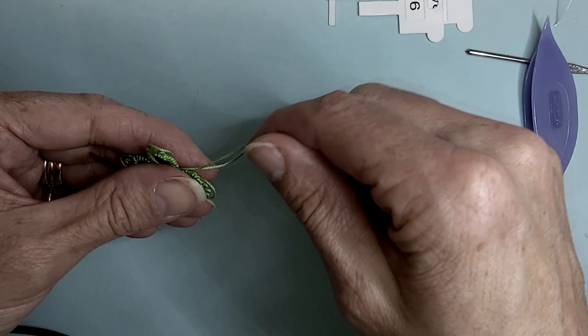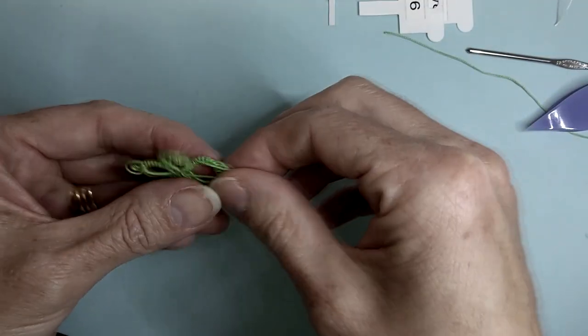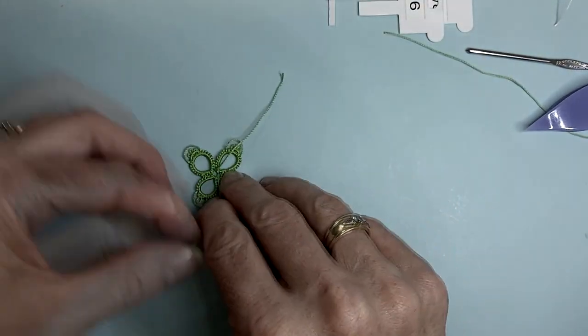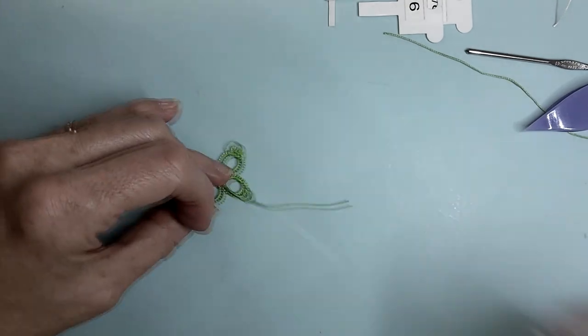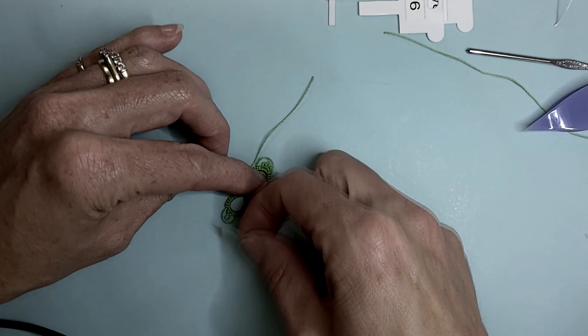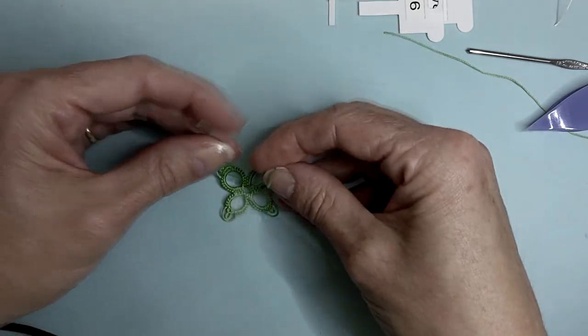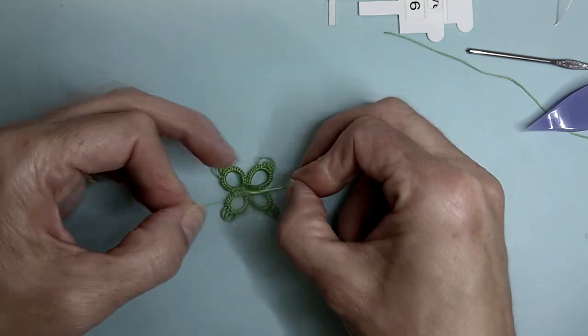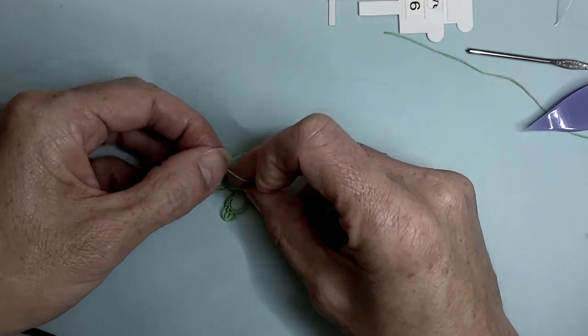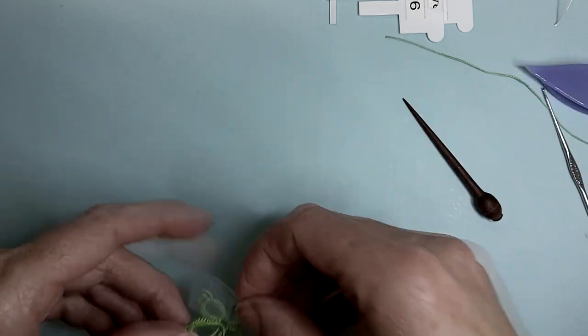On the back we are cutting our threads and tying a square knot. I find it's helpful to actually tape my butterfly down, just stops it from moving around and allows me to tie the knot without having to catch the butterfly.